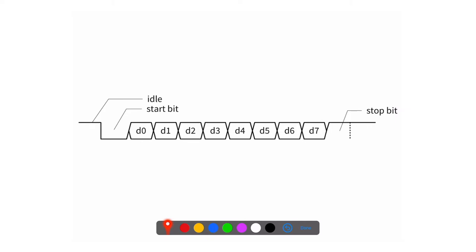In addition to agreeing on the number of bits, parity, and stop bits, both sides must agree on the rate at which data is sent. Each data bit — D0, D1, D2 — takes the same specific period of time. You agree on how many bits per second are sent, and that is called the baud rate.